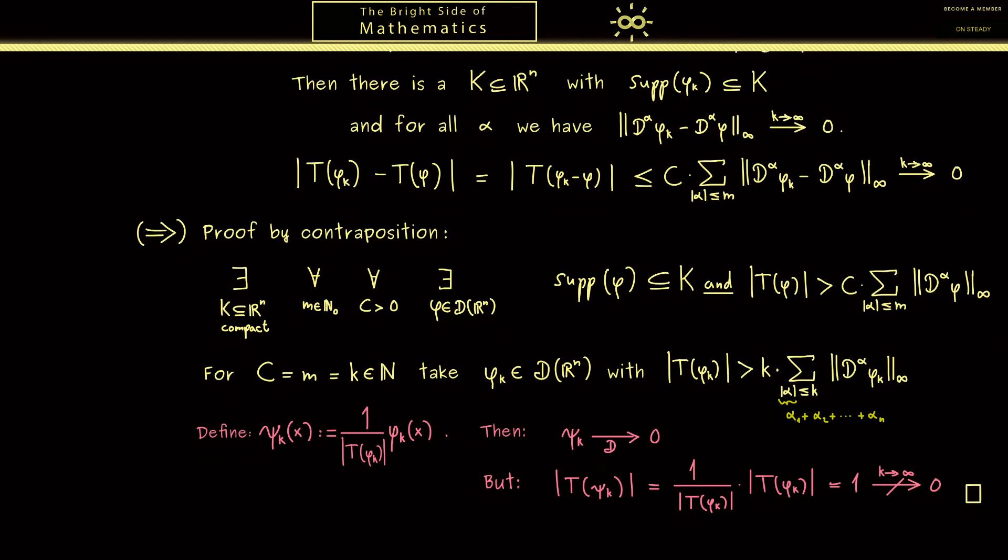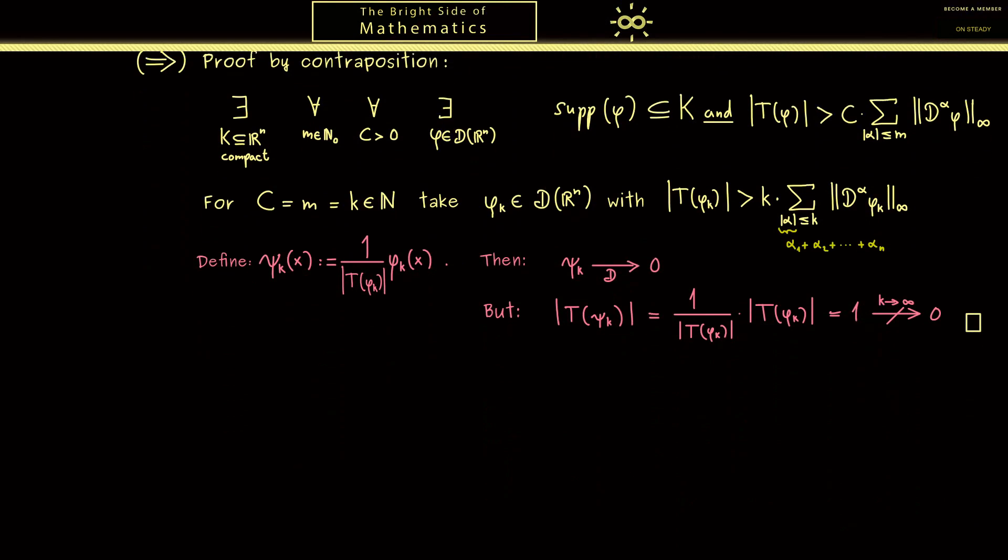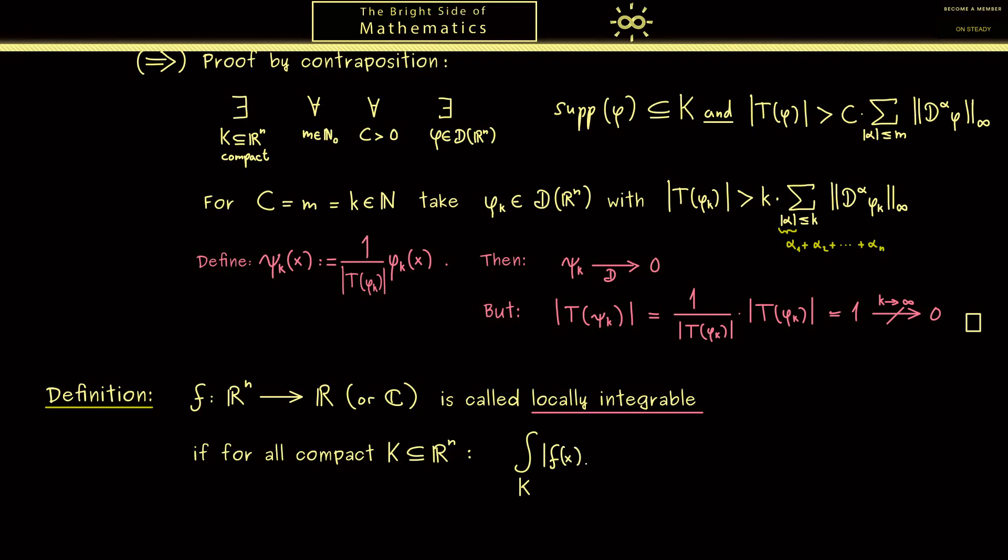With this technical proposition out of the way, we can go to the definition of a regular distribution. For this we first need the notion of a locally integrable function. Let's call the function f and it can have values in R or in C. And we call it locally integrable if the function is integrable when we restrict it to any compact set. So you can put it in the way that the integral over a compact set K of the function f with the absolute value makes sense and is finite.